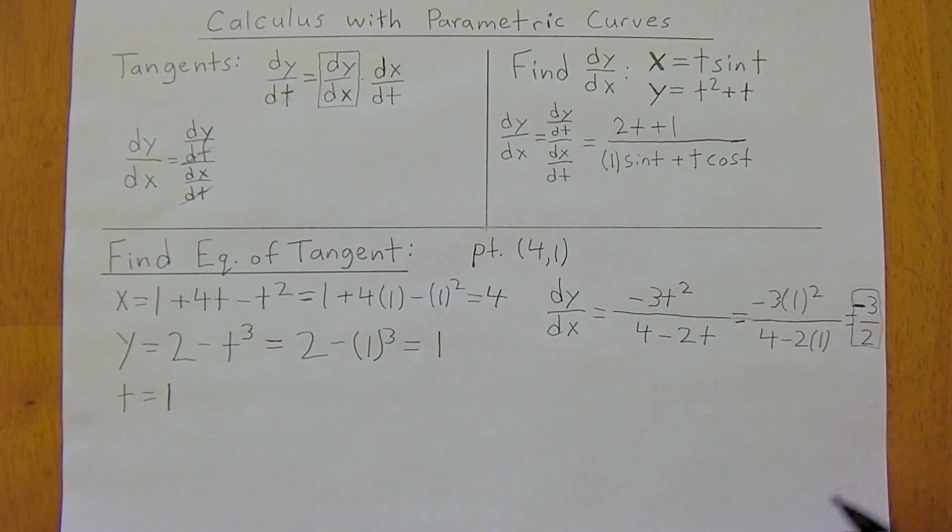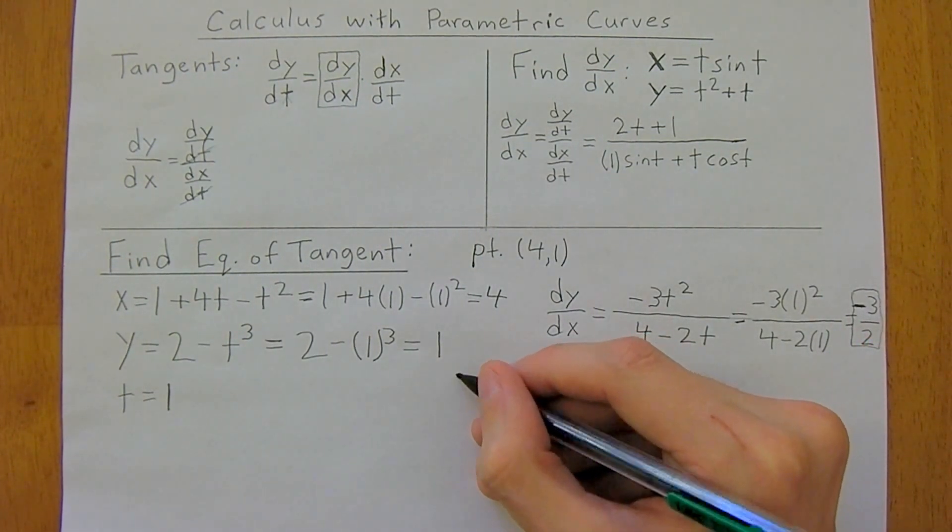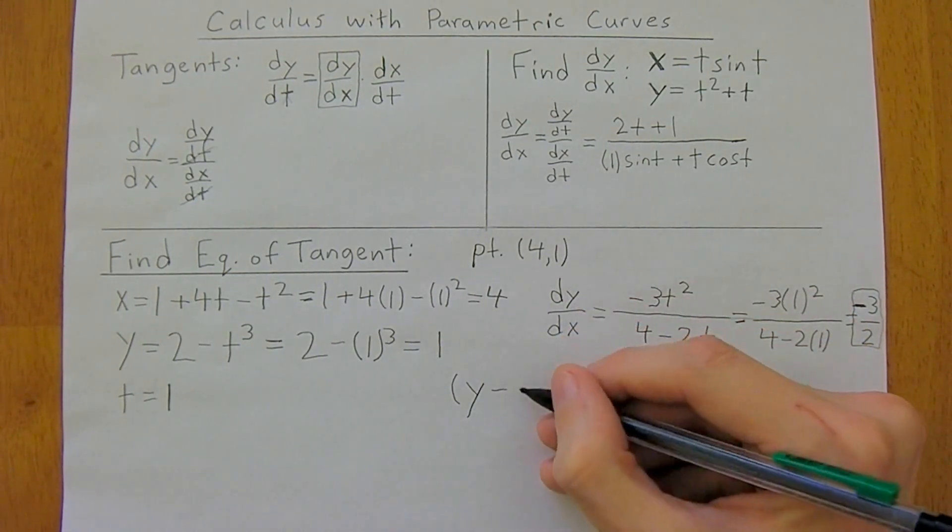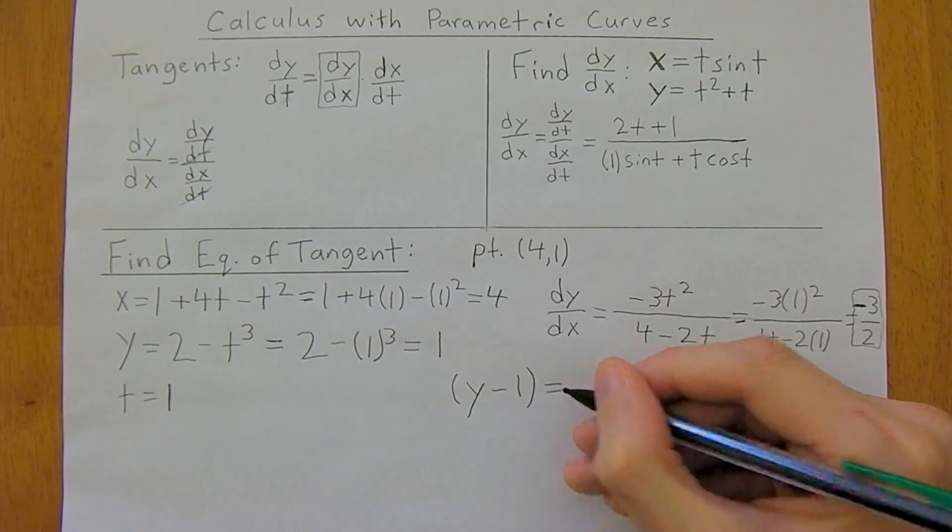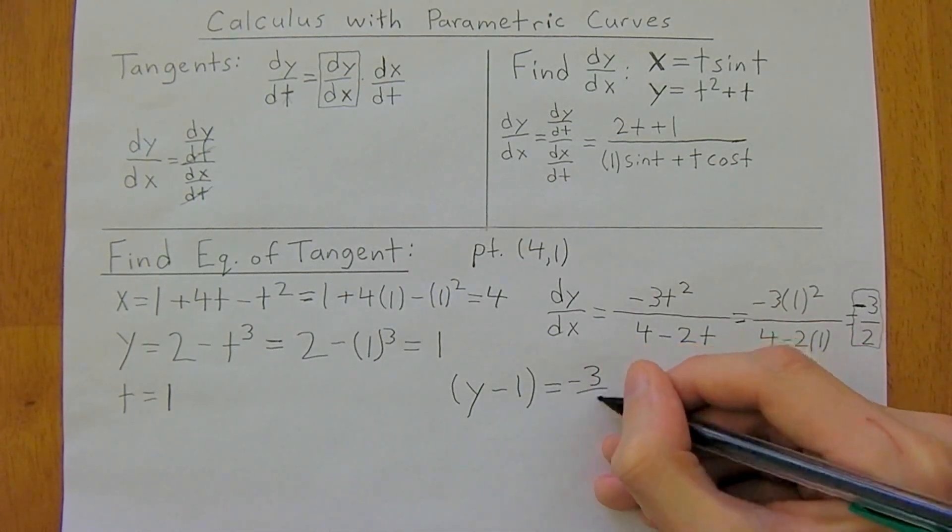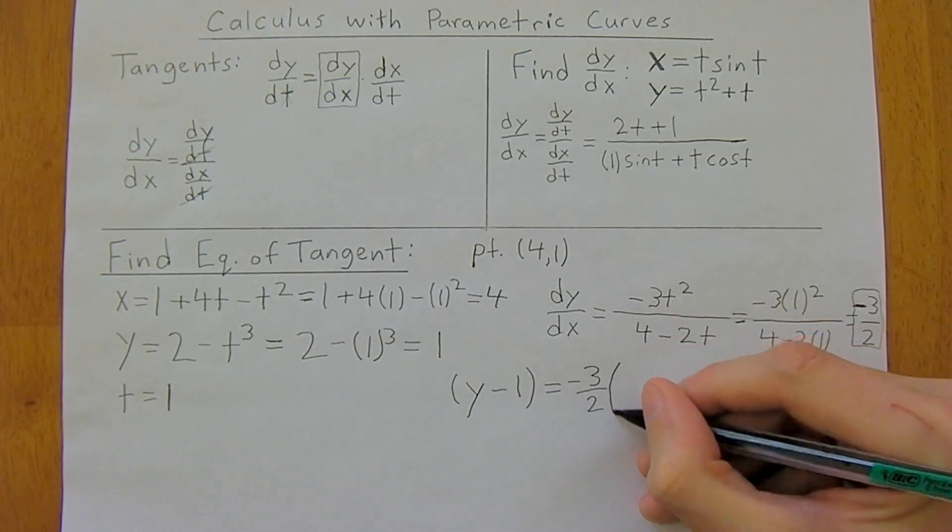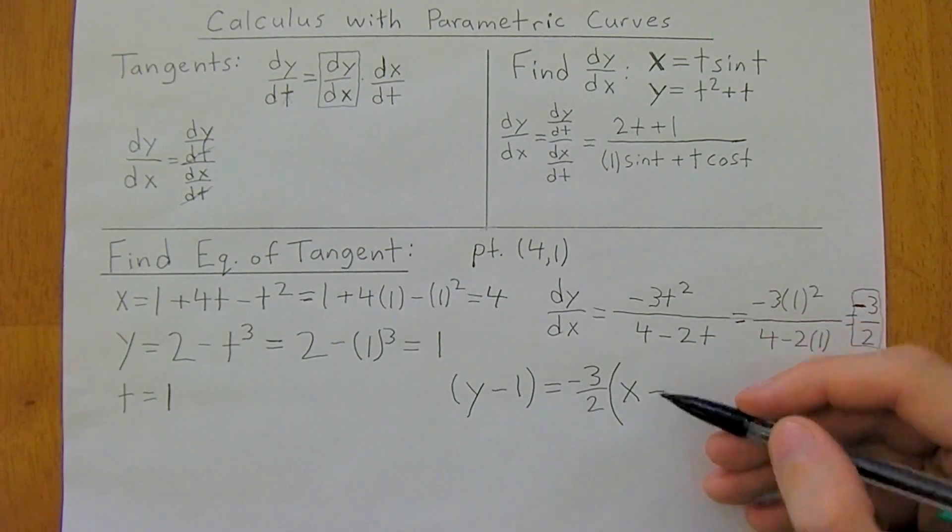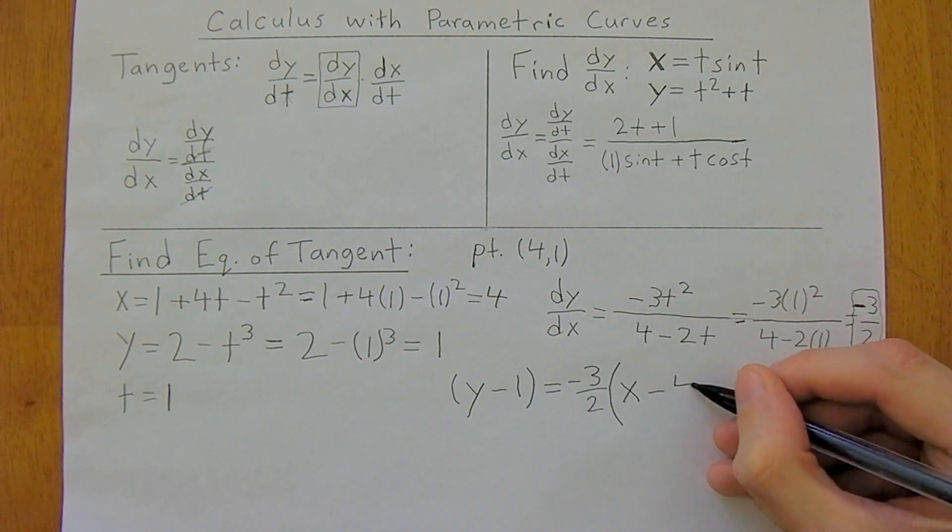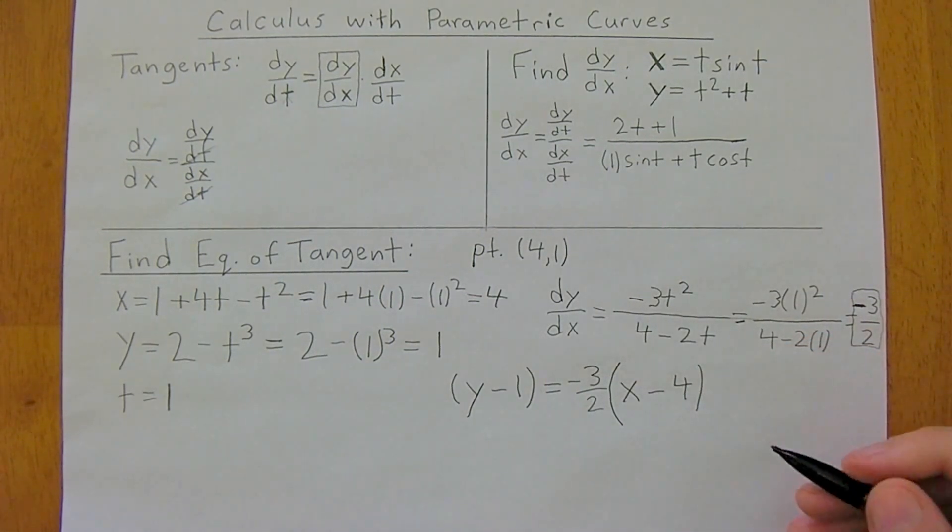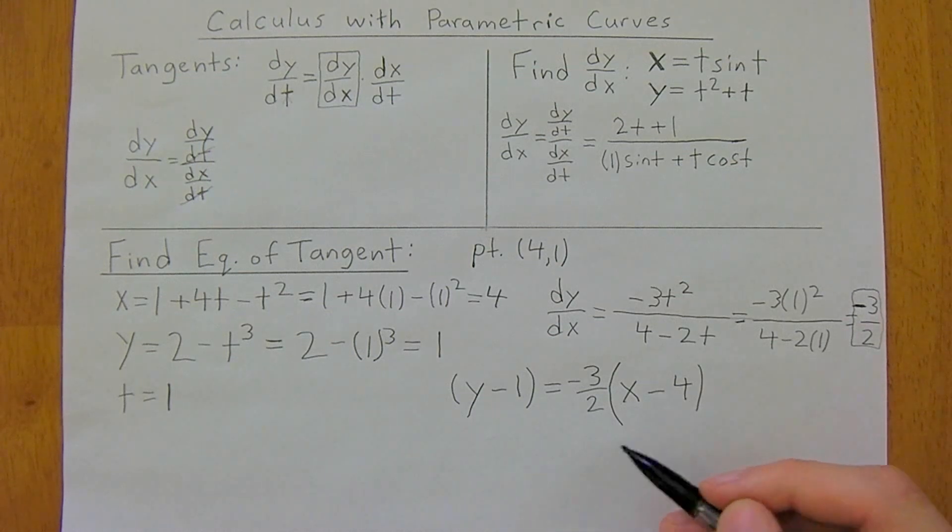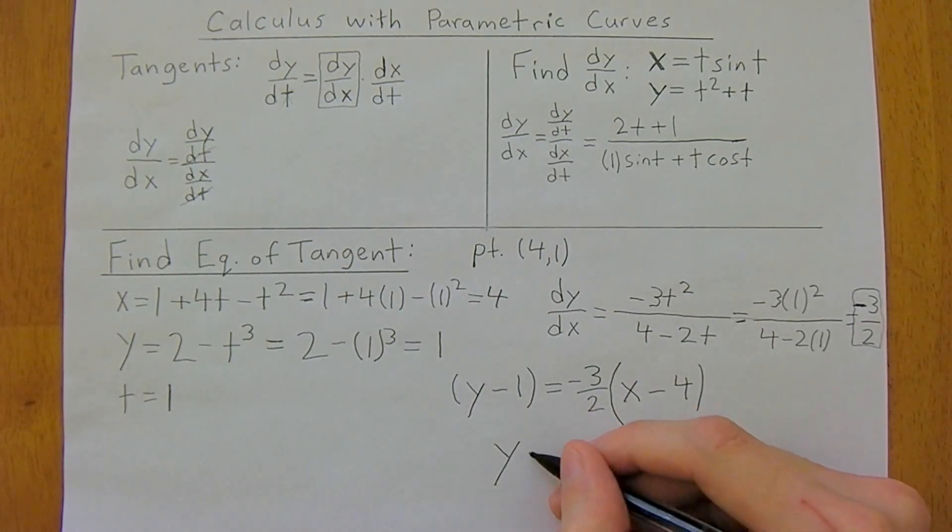So now to write out this equation, we just do y minus our y point, which is 1, which is equal to our slope, so negative 3 over 2, times x minus our x point, which is just 4. And, you know, I'd accept this. This is a legitimate equation for a line, but some people like to simplify it further.